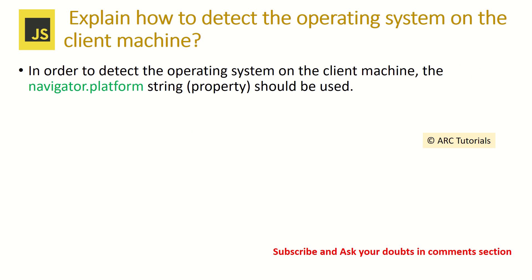How do you detect the operating system on the client's machine? In order to detect the operating system on the client machine, we use the global object navigator.platform. The navigator object has different options like appVersion and navigator that you can also use.